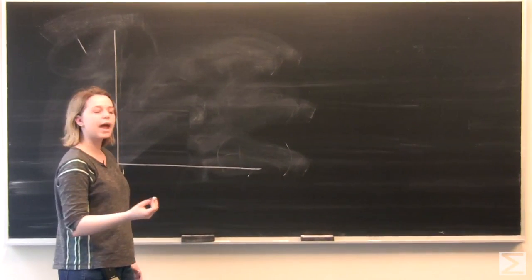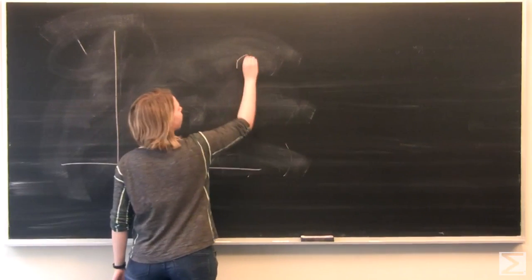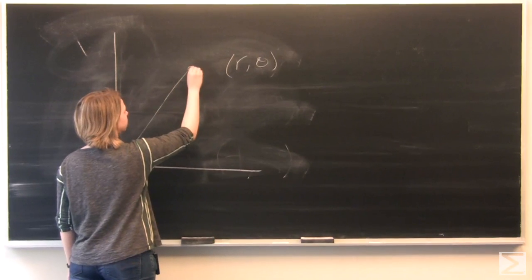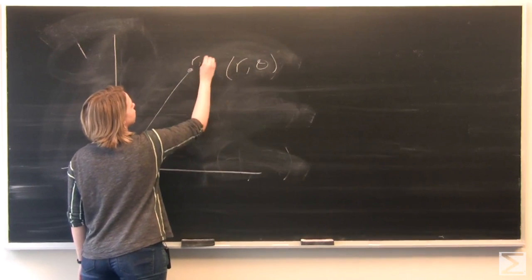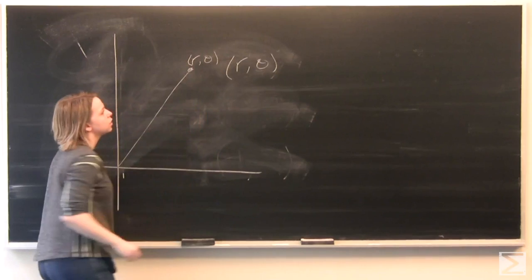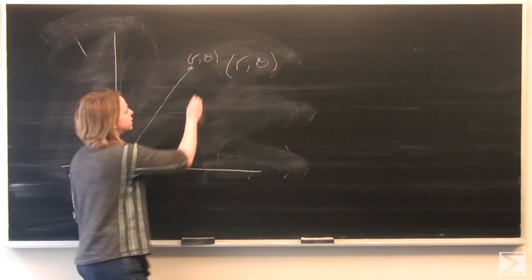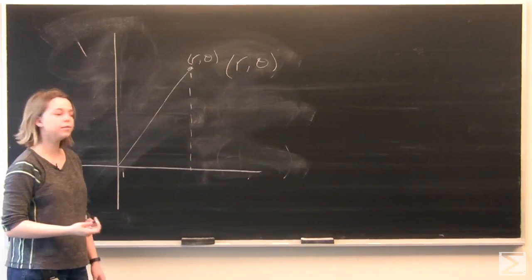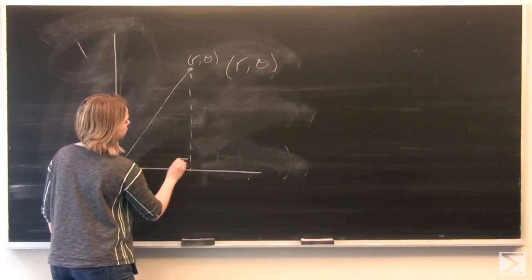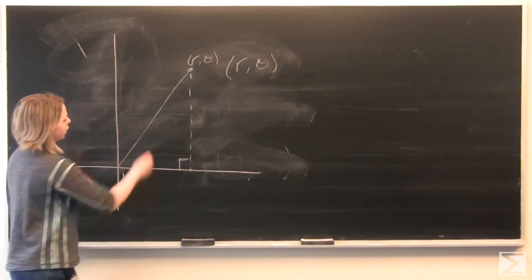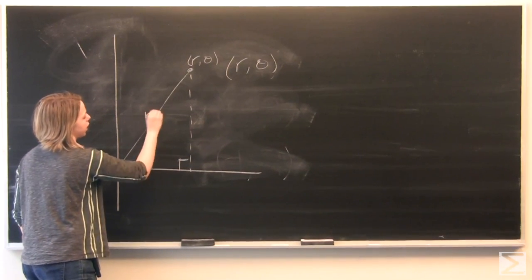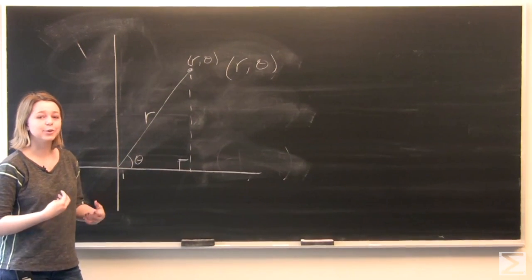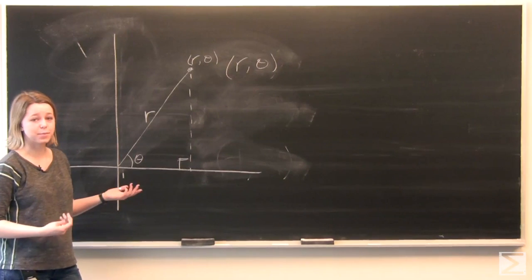What we're going to have is a point, our point R theta in polar coordinates. In order to convert this, what you need to notice is that if you drop down a parallel, what you have is just a right triangle. If you label our different parts, this looks like the perfect setup for your trigonometry rules and the Pythagorean theorem.